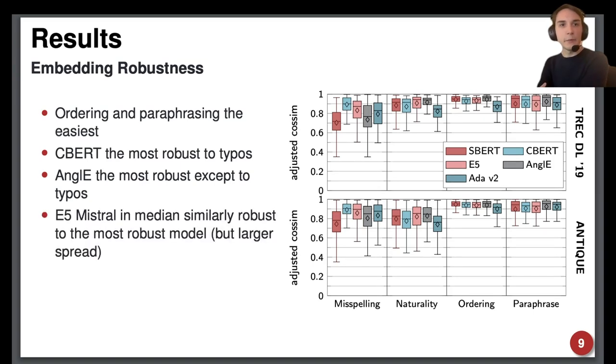Interestingly, the biggest model of the bunch, E5-Mistral, is in the median similarly robust to the best model in each category but exhibits a larger spread while it is also the most effective model in every category.